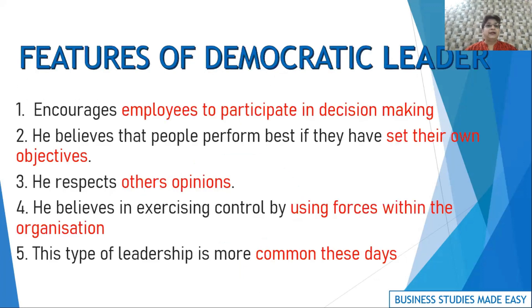The features of a democratic leader: First, he encourages employees to participate in decision-making. Second, he believes people perform best when they set their own objectives. For example, if workers need computer training, he calls the trade union leaders and asks whether workers prefer to stay back half an hour after work or come on Saturday and Sunday. He lets them decide — he allows them to set their own objectives and respects others' opinions.